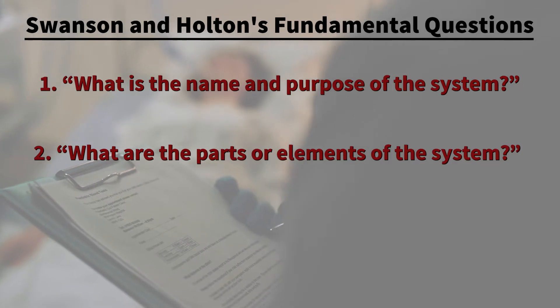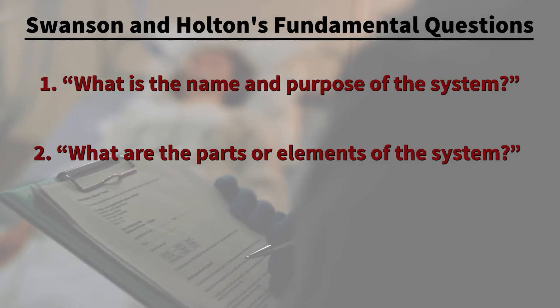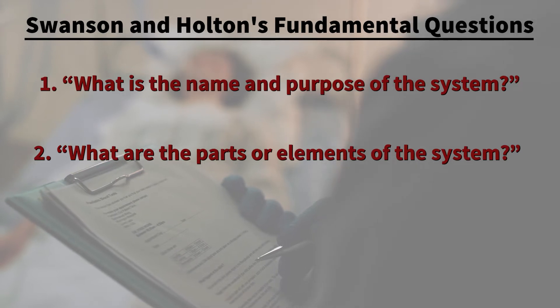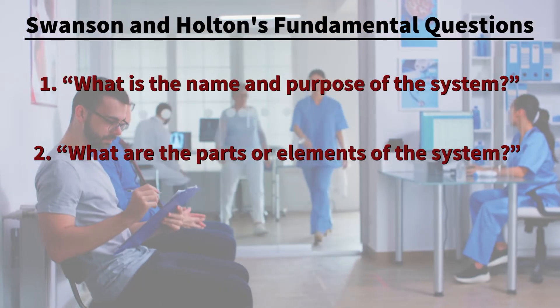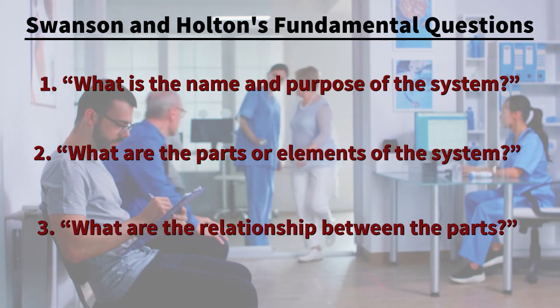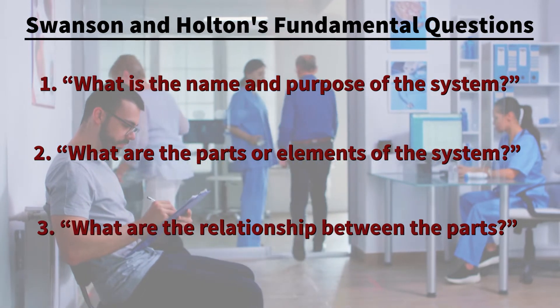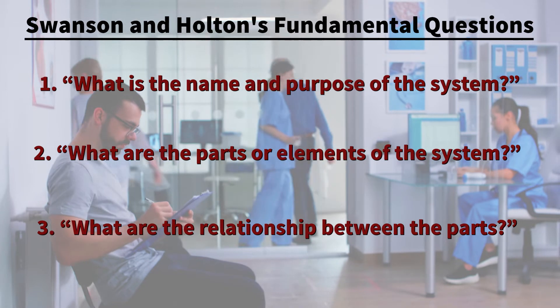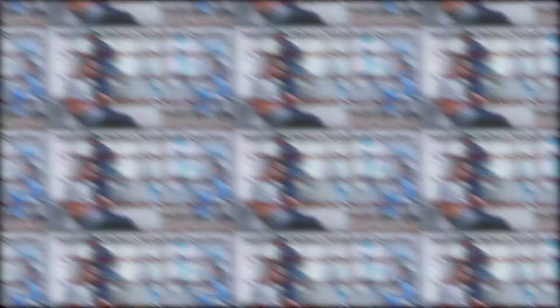The second question is: what are the parts or elements of the system? People often only see through their own perspectives for organization and system-wide problems, and it's critical to understand all perspectives. The third question is: what are the relationships between the parts? Swanson and Holton call this the real magic of systems theory — analyzing the relationships between the parts and the impact of those relationships.